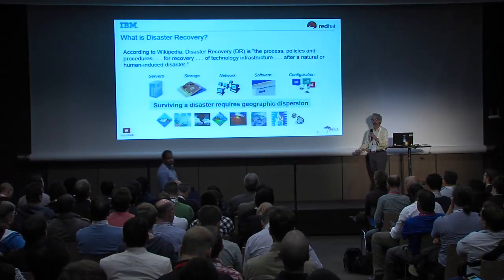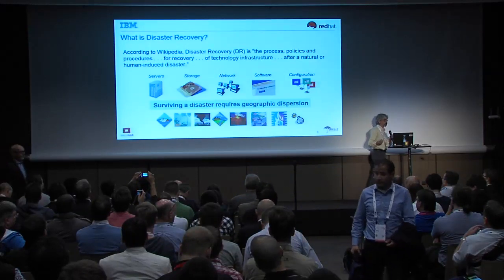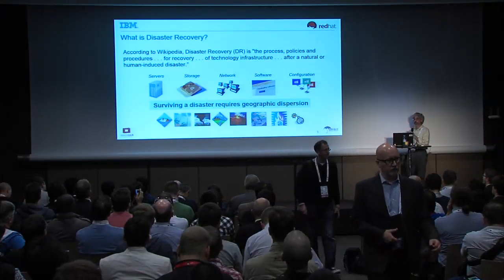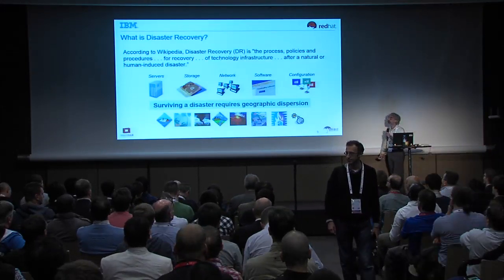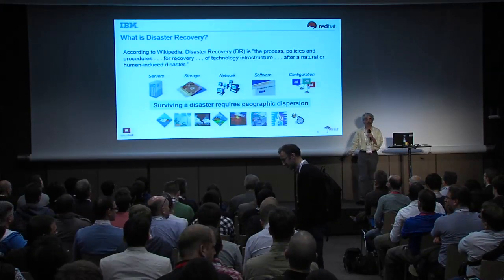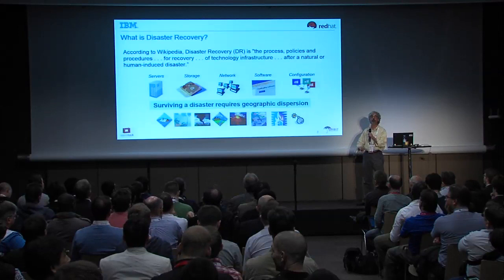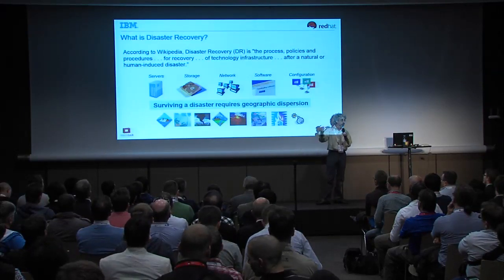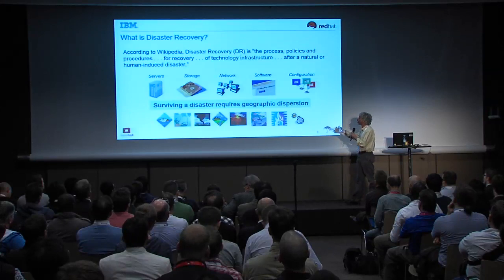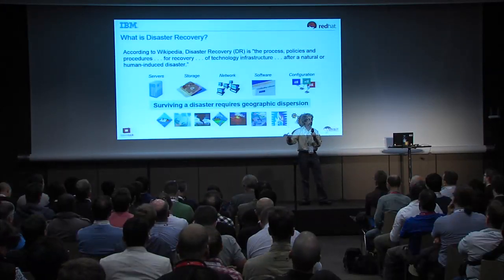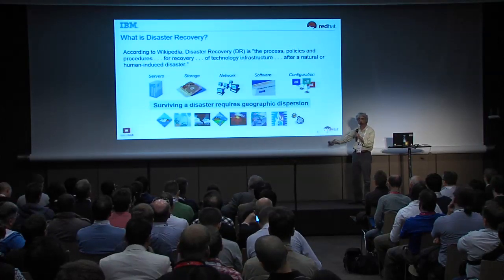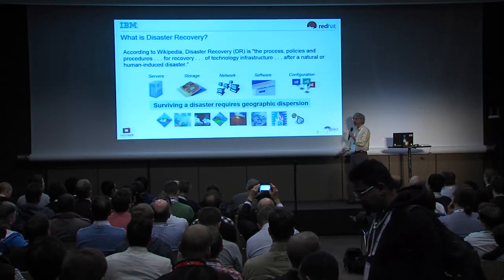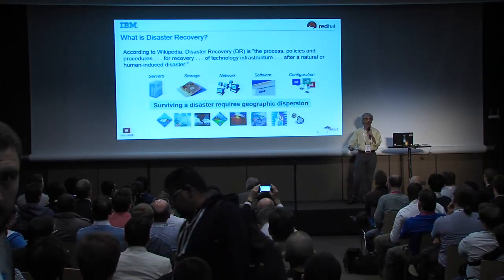Let's start with some level setting. What is disaster recovery? According to Wikipedia, disaster recovery is the process, policies and procedures for recovery of technology infrastructure after a natural or human-induced disaster — in other words, what is needed to get your IT running again so that your business can be doing something useful. IT infrastructure includes servers, storage, network, software, and configuration. It contains both data and metadata. Data, for instance, is stored in storage managed by Cinder and could be things like a database or log files. Metadata is things like configuration information, what VMs are running, how your network is configured, and so on.